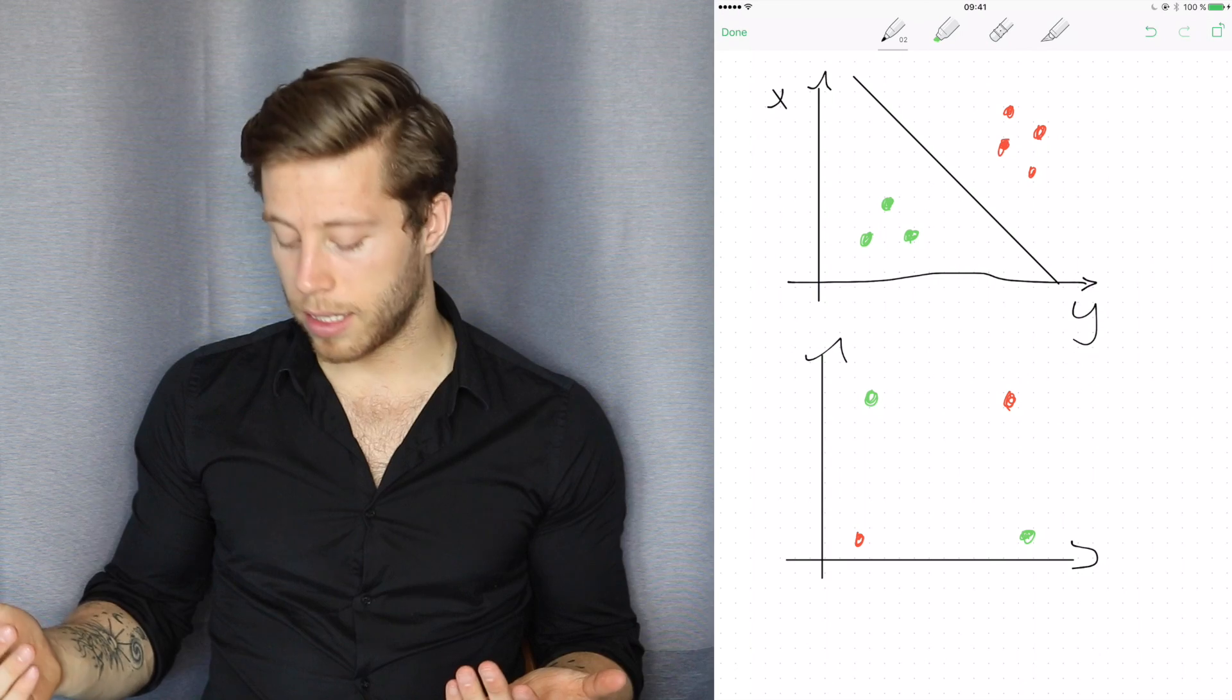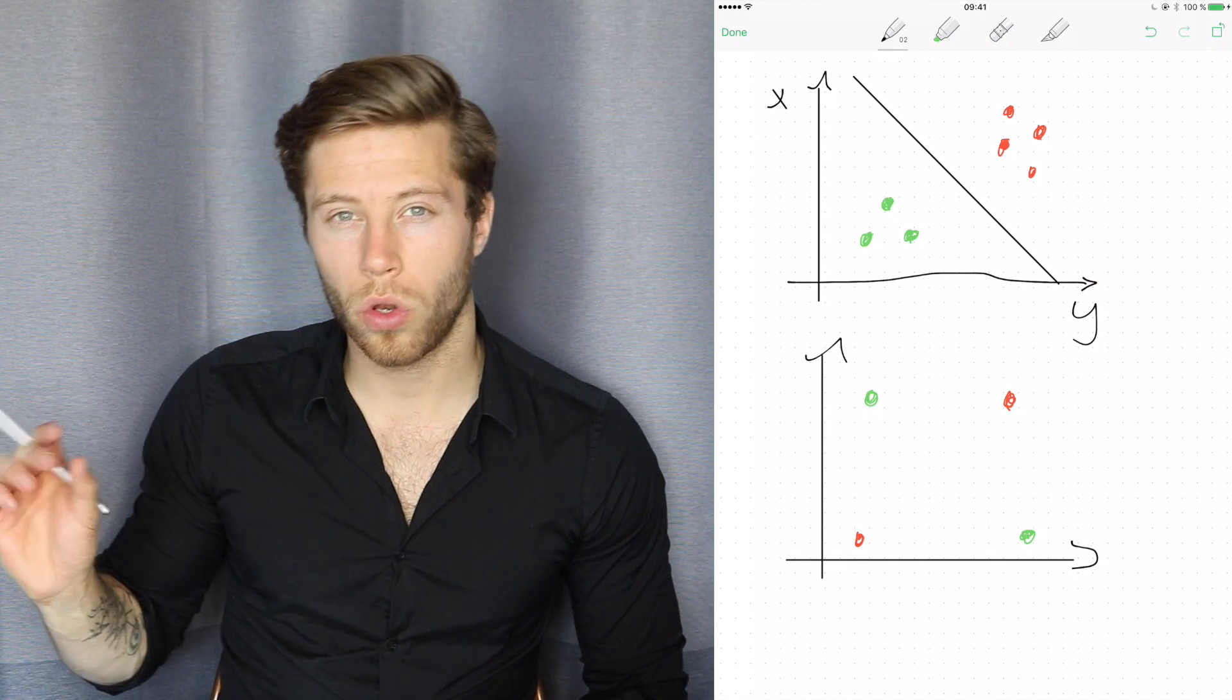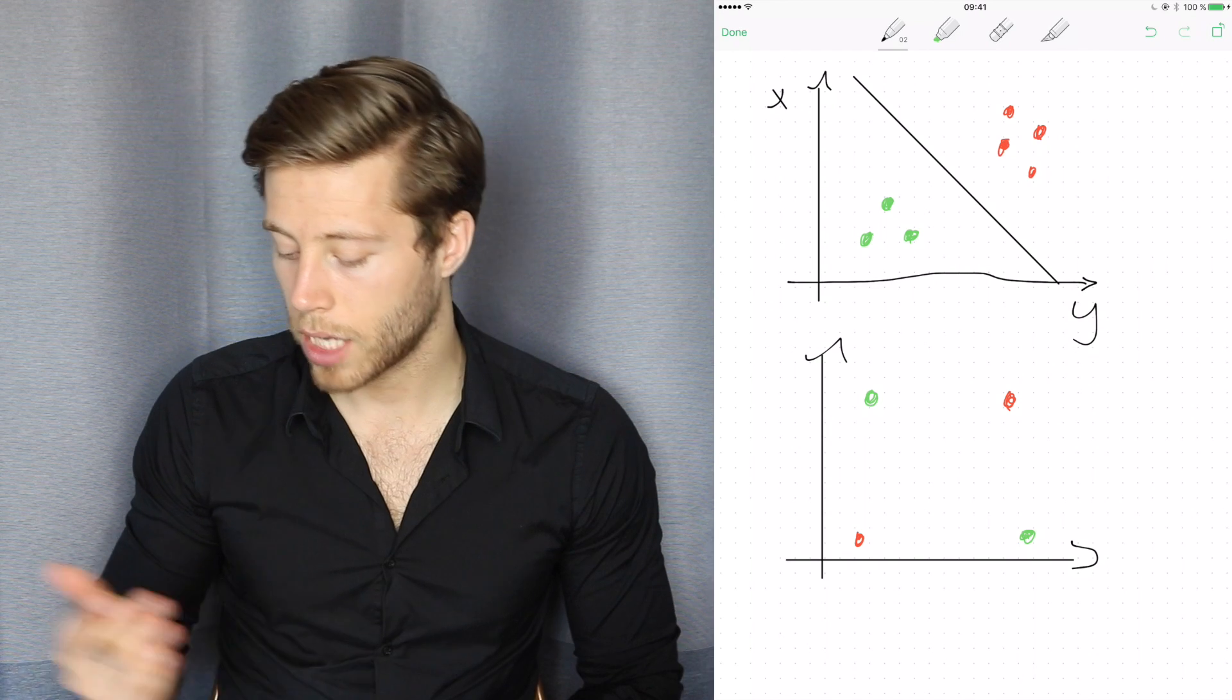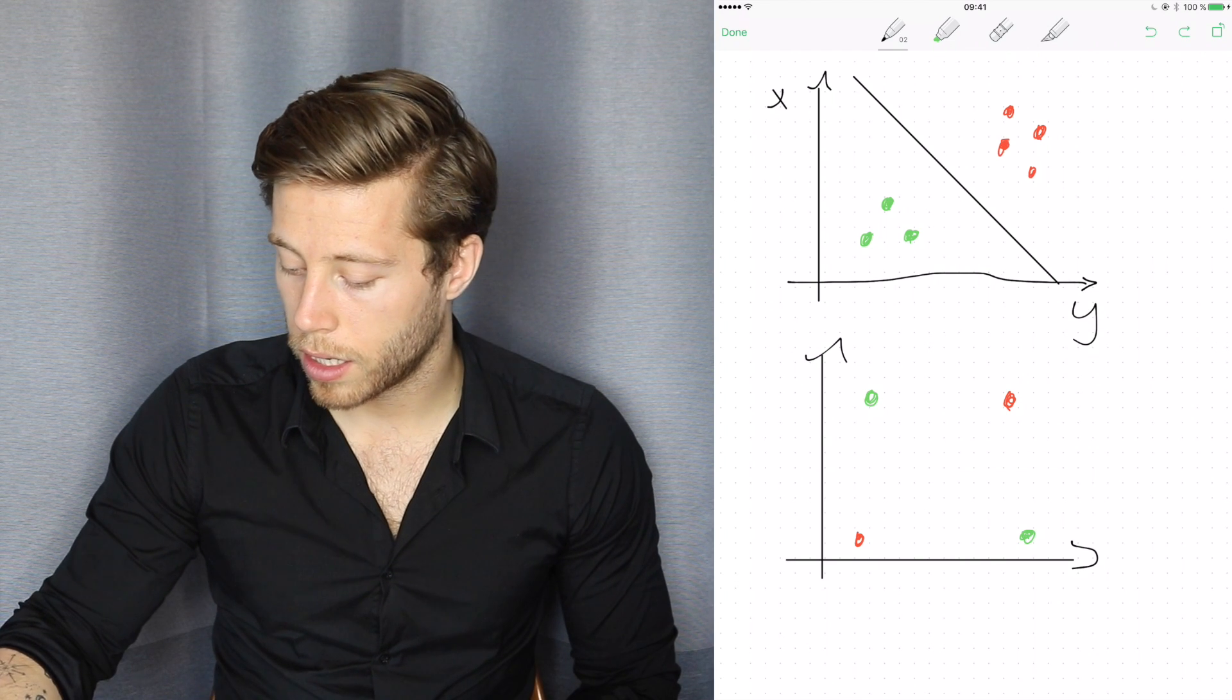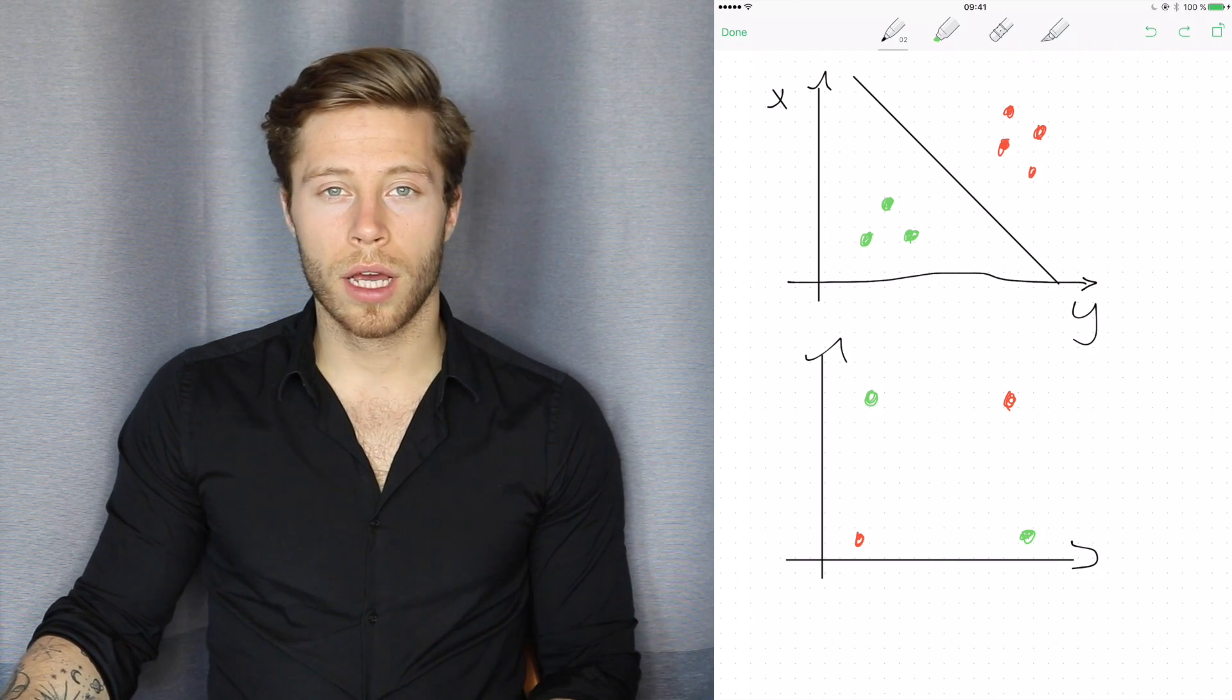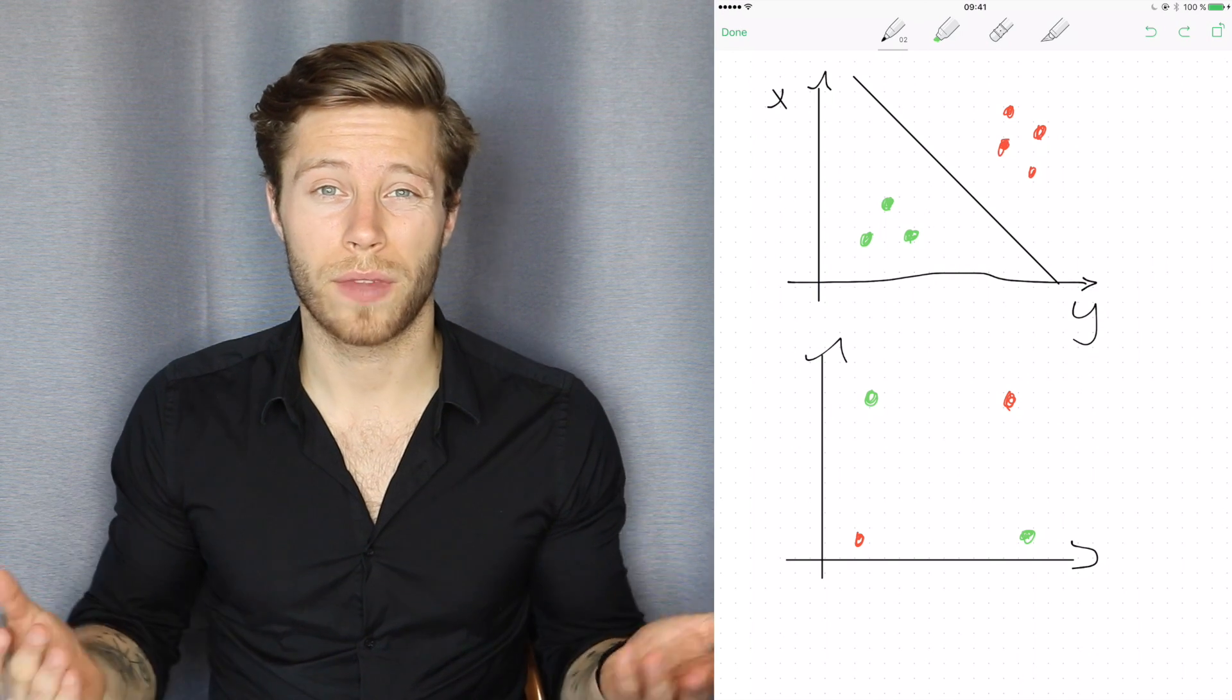Looking at this graph, we know that our Perceptron can only do a linear, a line in this graph and separate these, right? And looking at this, it's not possible to do one line that separates these into two different groups. Because we wanted all of the points that belong to the green group on one side of the line and all of the points that belong to the red group on the other side of the line. And I mean, if you do it like this, it doesn't work. If we put it like this, it doesn't work.